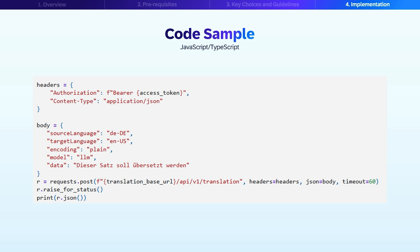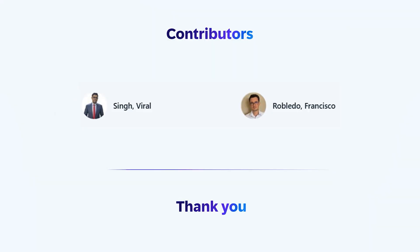This concludes our overview of using the Translation Hub service. We have covered the benefits of using TranslationHub, prerequisites, solution overview, implementation steps, key decision factors, and implementation guidelines with a practical code example. This best practice reflects the collective expertise of AI specialists from across SAP, bringing together insights to support your journey. Thank you for watching — we hope the information provided helps you successfully implement translation capabilities in your business applications.